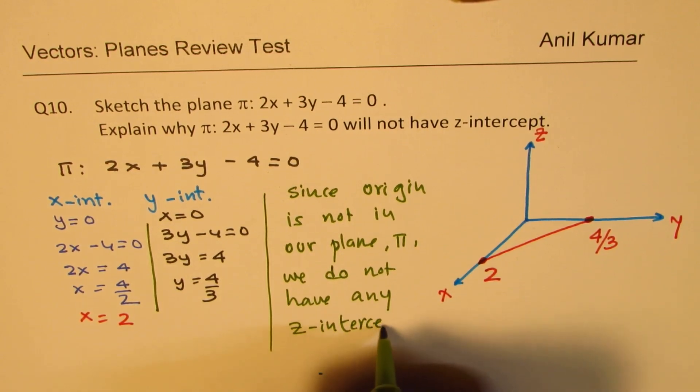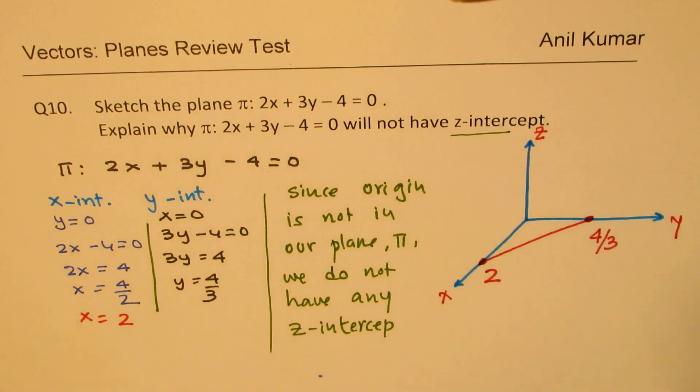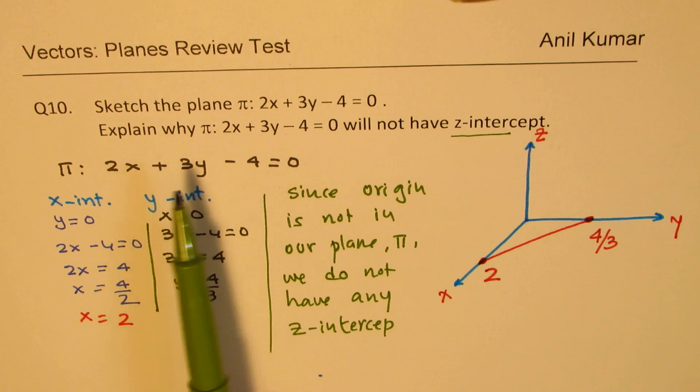In our plane π, we do not have any z-intercept. Now this is very important to understand. So z-intercept does not exist. To find z-intercept, we'll have to put x and y 0, just as we did here.